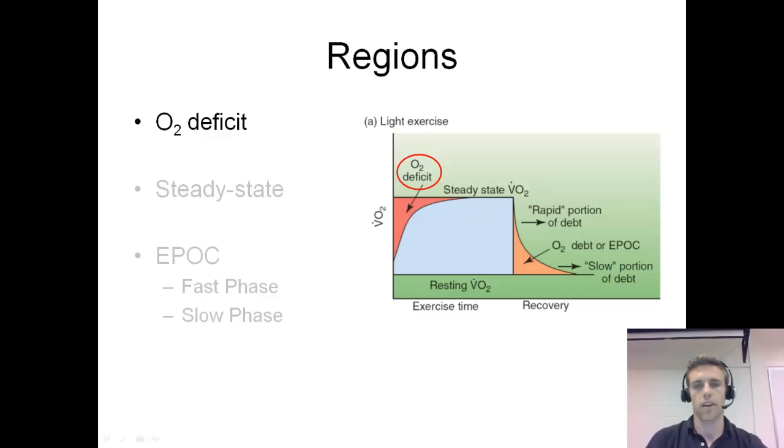If you're a trained athlete, then your oxygen deficit is going to be pretty small. It just means that you can reach the steady state sooner if you're a trained athlete. You'll talk about this a little bit more later on in the semester about adaptations to exercise and training.